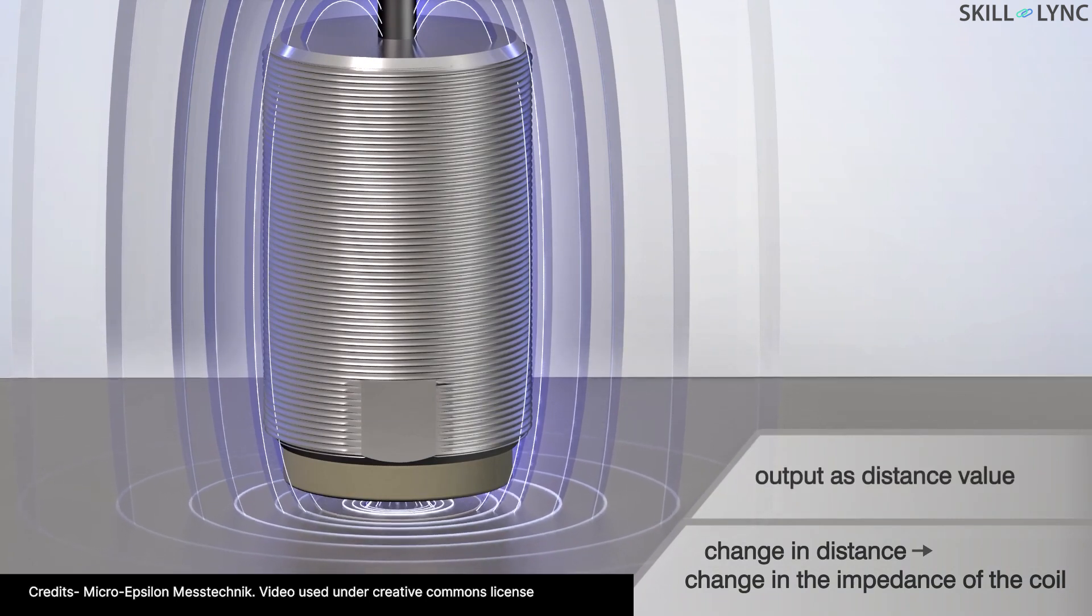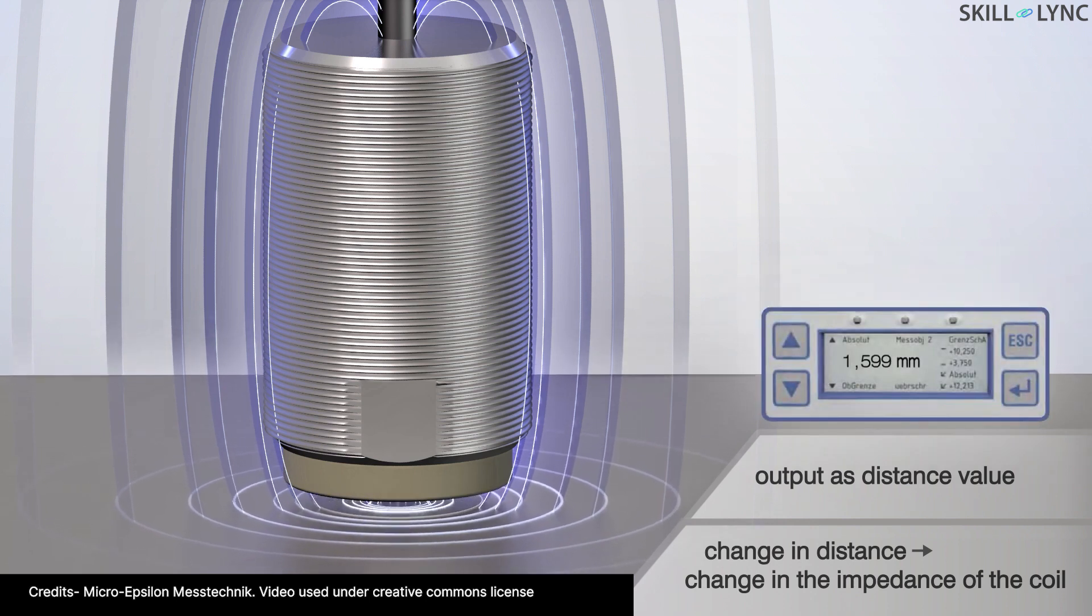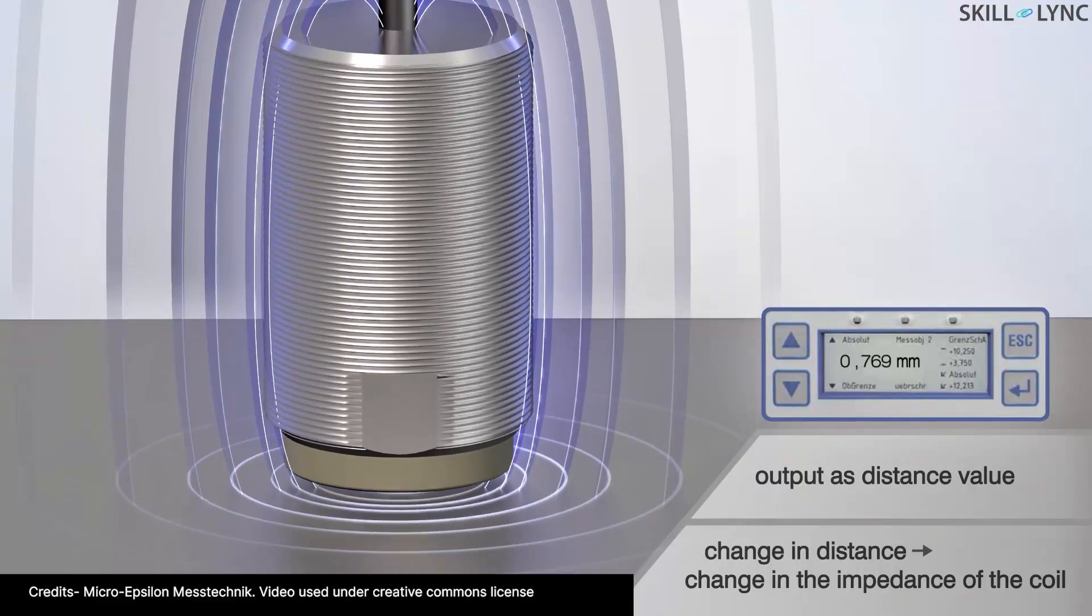As the distance between the two metals changes, it results in a change in the magnetic field of the coil and hence the amplitude of the alternating current changes. This change in amplitude is proportional to the distance between the coils.